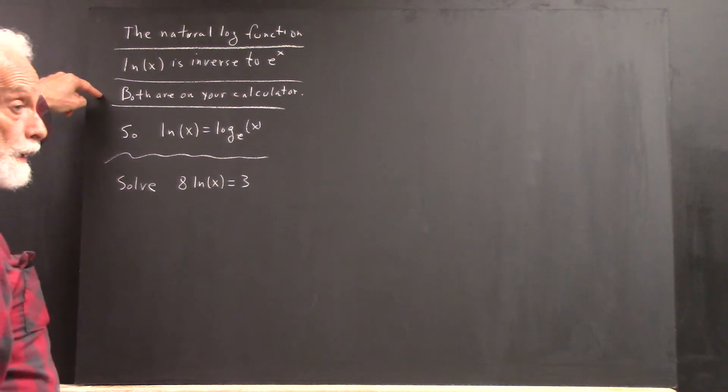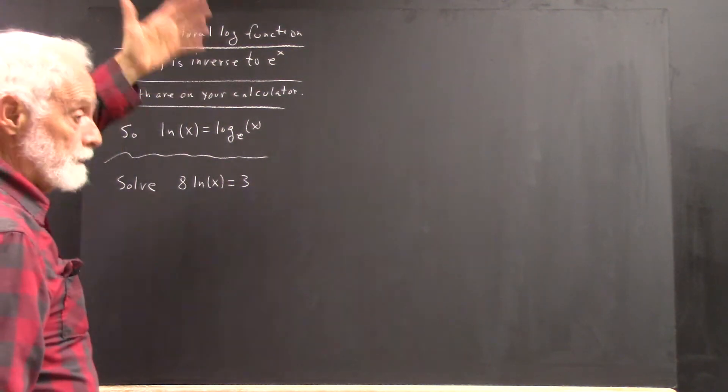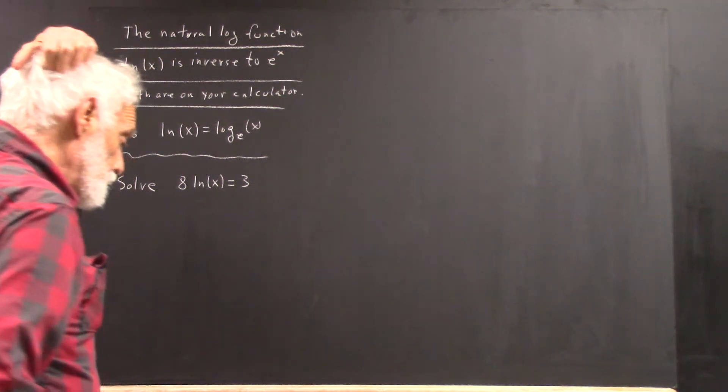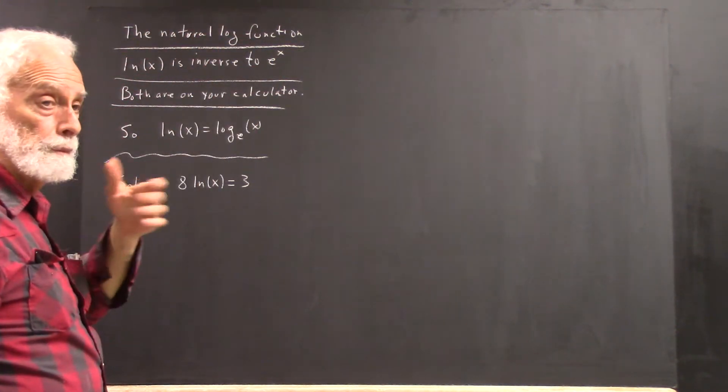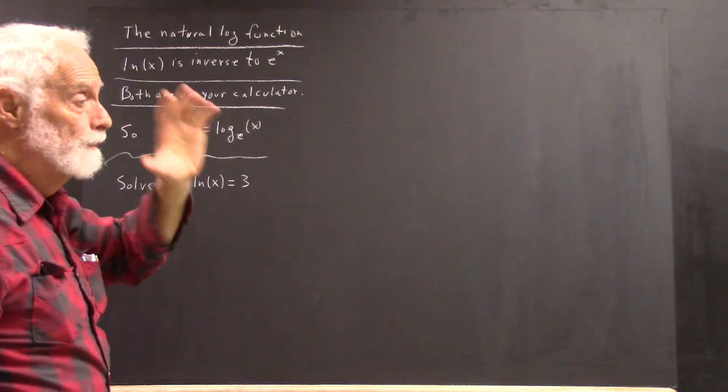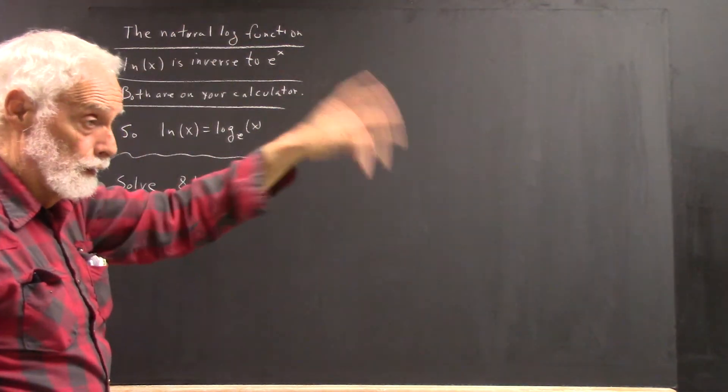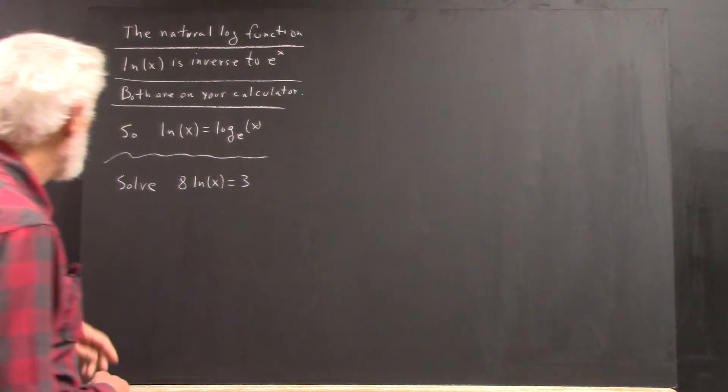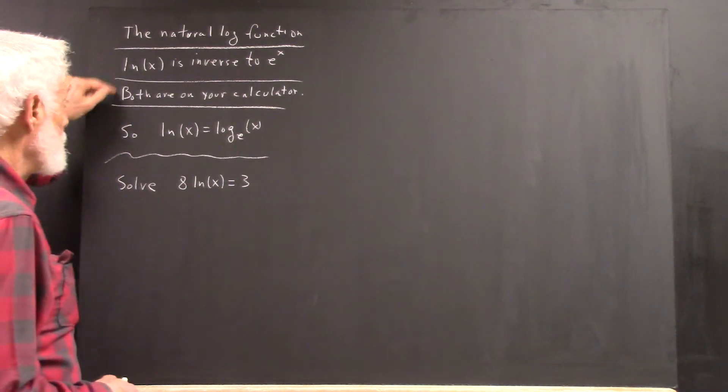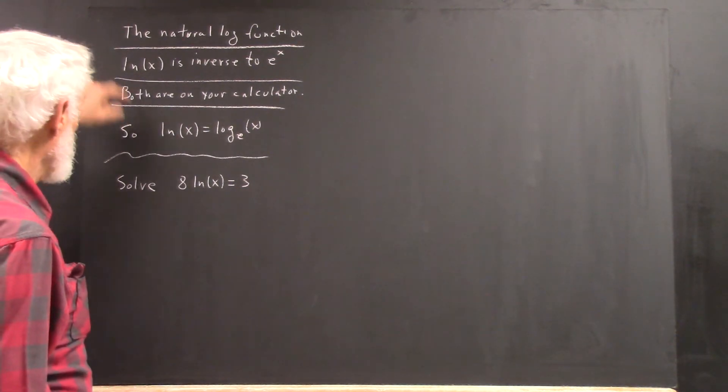Both these functions are on a calculator. The values of the natural log and the exponential function are almost all irrational numbers. Long decimals, infinitely long decimals that never repeat, no pattern. Both these things are on your calculator. Let's see how to use it.